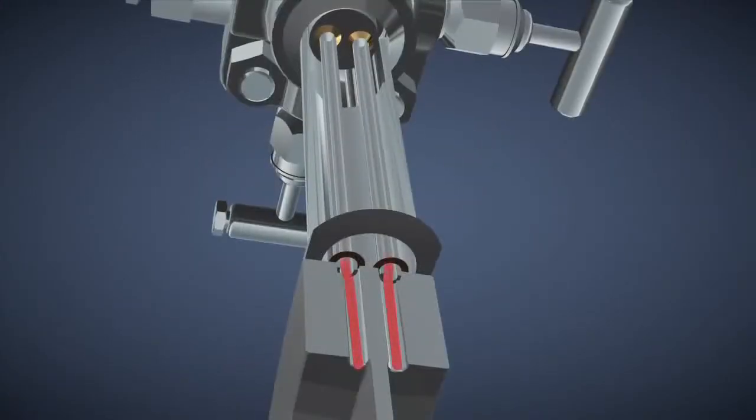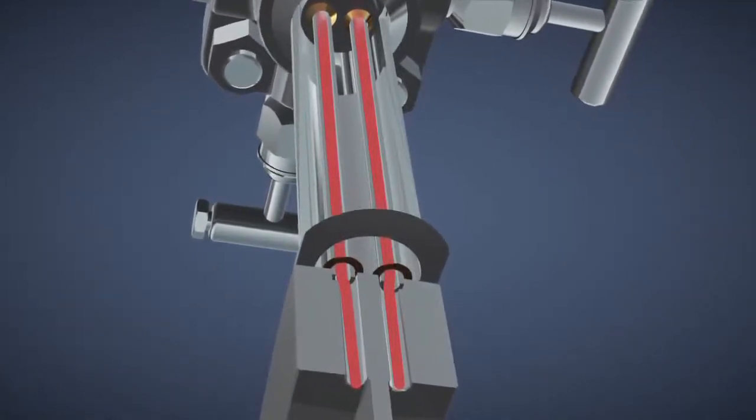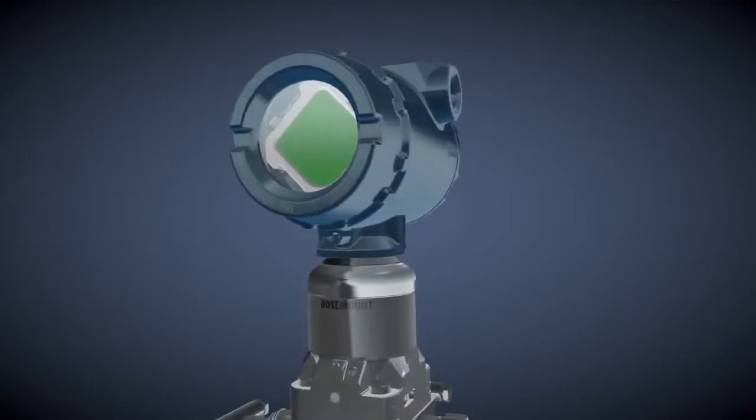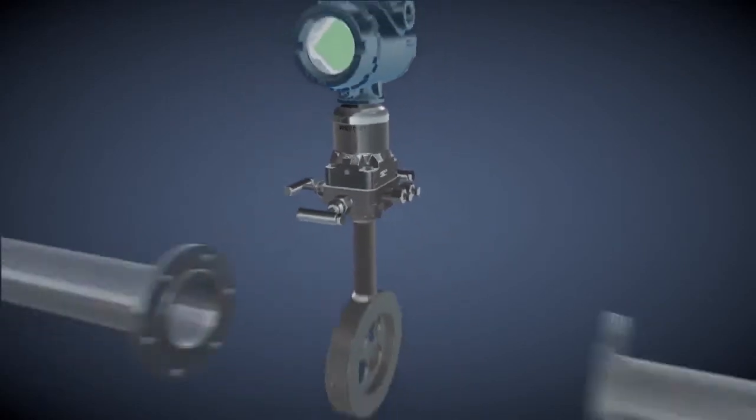Now, with new and improved primary elements, the impulse piping is built into the primary element. This allows the transmitter to be directly mounted to the isolate and equalize valves, resulting in an integrated flow meter.